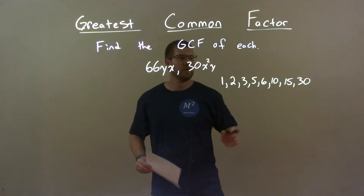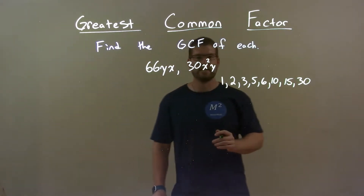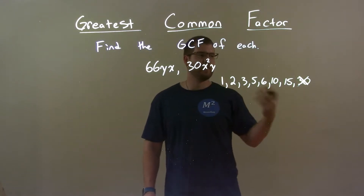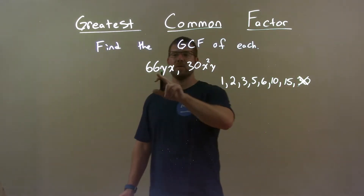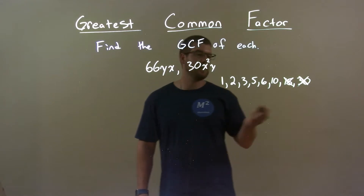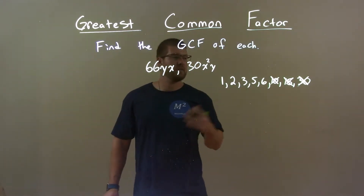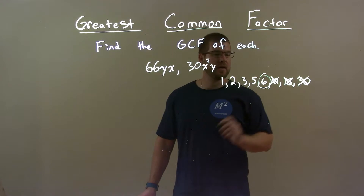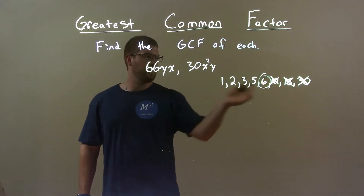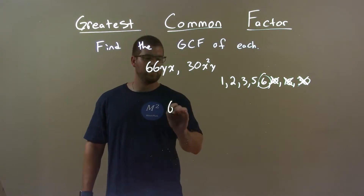Now I'm going to try to find the largest one of these that also goes into 66. Well, 30 doesn't go into 66 because 30 times 2 is 60. 15 — no, because we don't end in a 5 or 0, guaranteed no. 10 doesn't go into 66, it goes into 60. But 6 goes into 66 eleven times. So 6 is my answer here — 6 goes into both of those numbers. So the greatest common factor of 66 and 30 is 6.